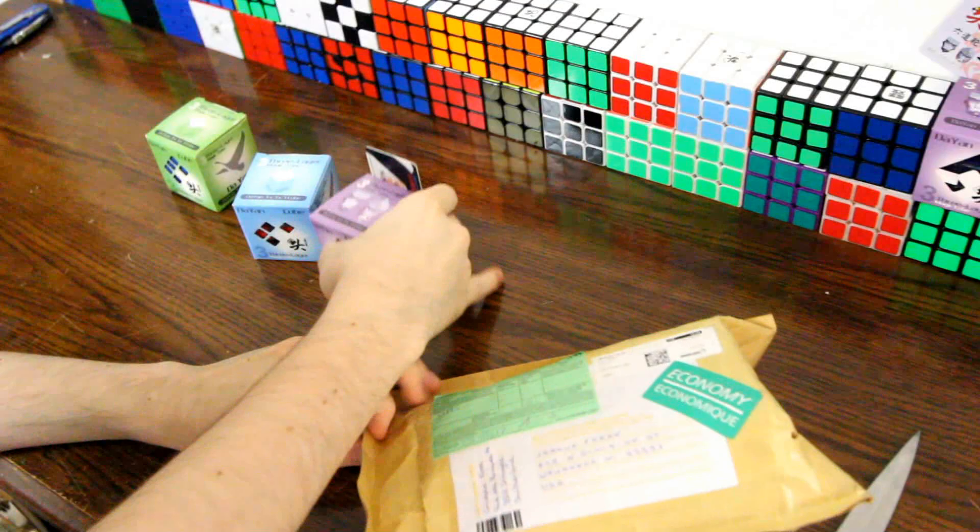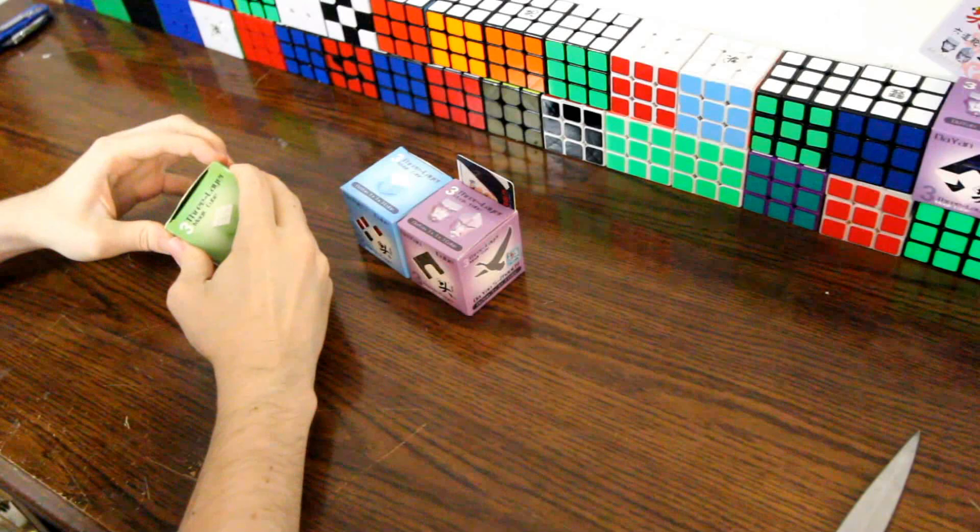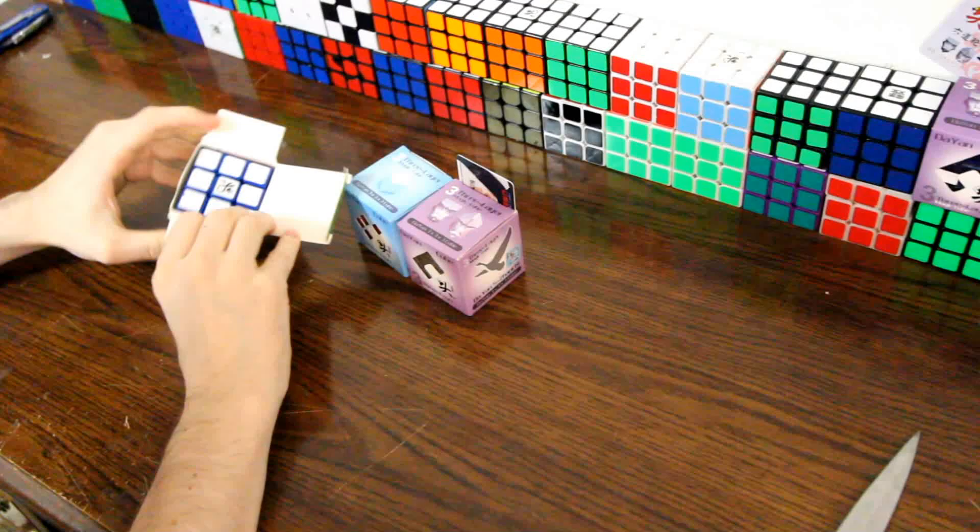Alright so we're going to start off over here. This is a Guhong, a Guhong version 2. They had blue prototypes of them. I'm not quite sure how many were made. There were two stores that sold them.